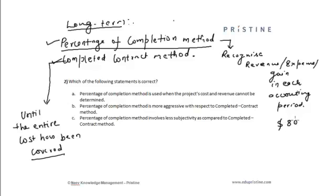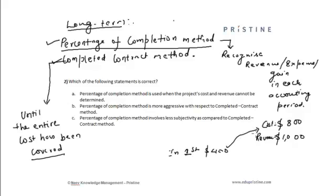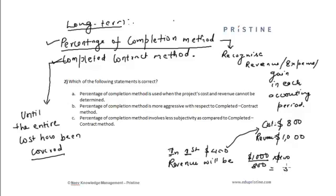For example, we are building a ship with a cost of eight hundred dollars and a revenue of one thousand dollars. In the first year, suppose I expense four hundred dollars out of this eight hundred dollar cost.